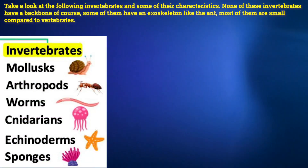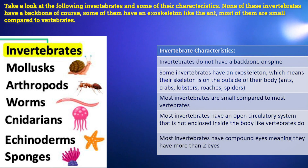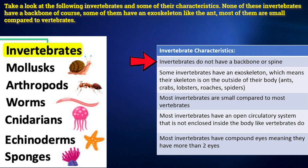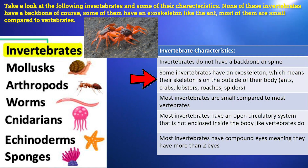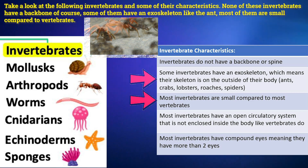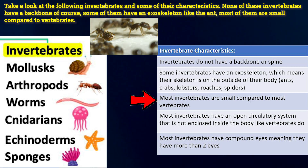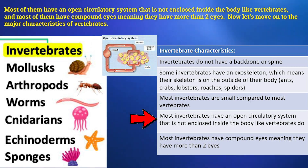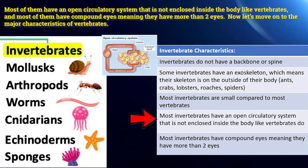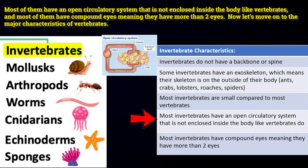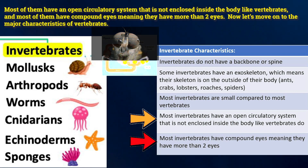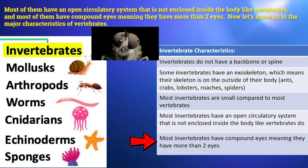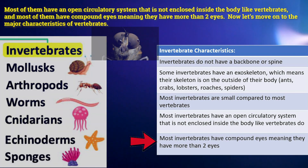Take a look at the following invertebrates and some of their characteristics. None of these invertebrates have a backbone, of course. Some of them have an exoskeleton, like the ant. Most of them are small compared to vertebrates, and most of them have an open circulatory system that is not enclosed inside the body like vertebrates. Most of them also have compound eyes, meaning that they have more than two eyes.